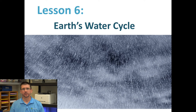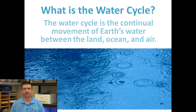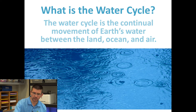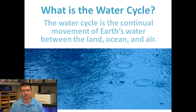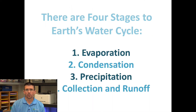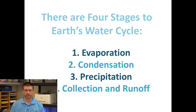For our last lesson in our matter unit, we're going to be talking about the water cycle. The water cycle really ties in with what we've been talking about in this unit with regard to changes in state and physical changes. The water cycle basically describes the movement of Earth's water from the ground to the atmosphere to the oceans, lakes, and streams. It's an ongoing process by which water is used, recycled, and moved around the Earth, and it consists of four stages.